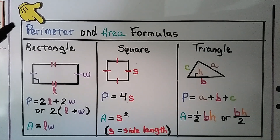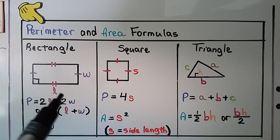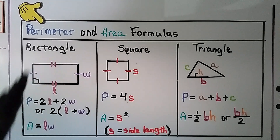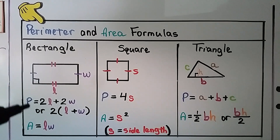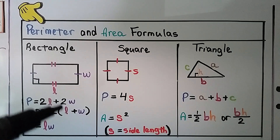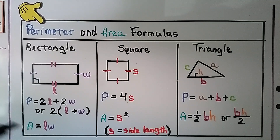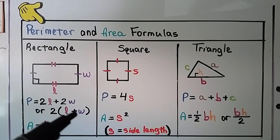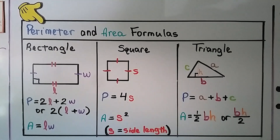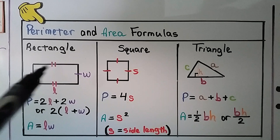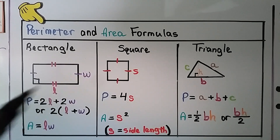Here are the perimeter and area formulas for your notes. For a rectangle, we do 2 times the length — because we have a length on each side — plus 2 times the width. The perimeter is equal to 2 times the length plus 2 times the width. Using the distributive property, we can also write it as 2 times the quantity length plus width. The area is just length times width.